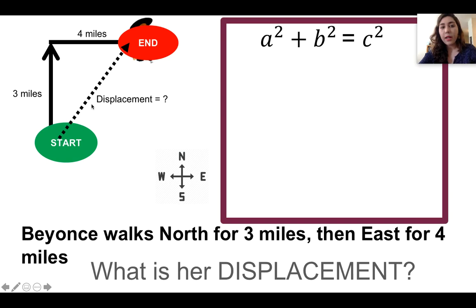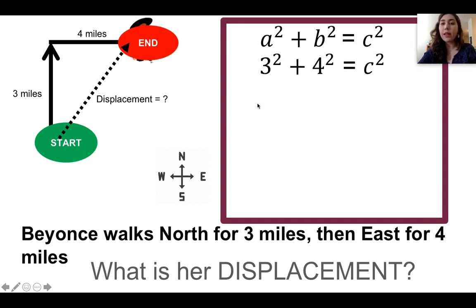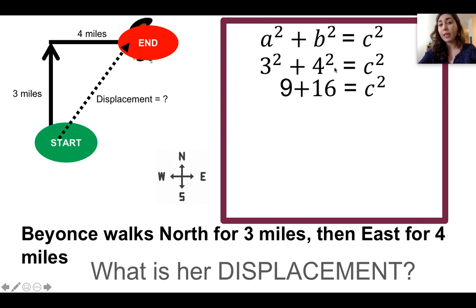Directly across from the right angle we have the long dotted line, which is the displacement — that's the hypotenuse, which goes in for c in our equation. So instead of a² + b² = c², we put in three and four for a and b, since c is what we're trying to find. Three squared plus four squared equals c squared. Squaring a number means multiplying it by itself: three squared is three times three, four squared is four times four — so we get nine plus sixteen.